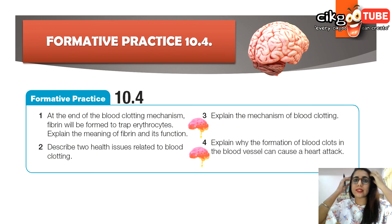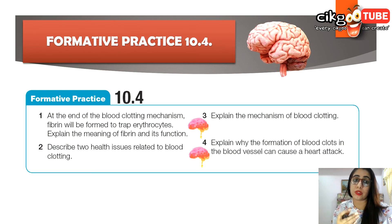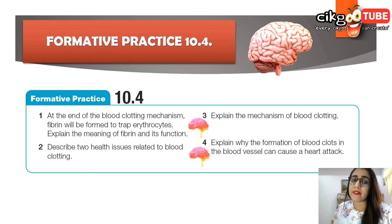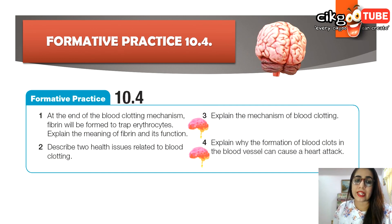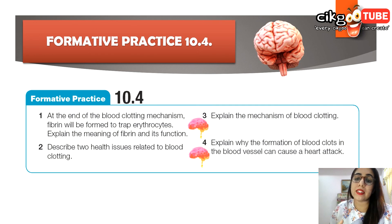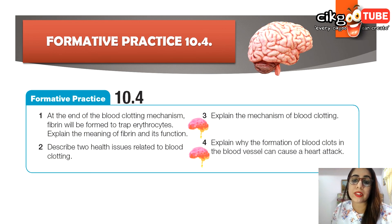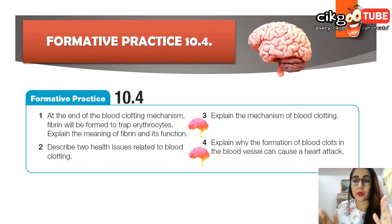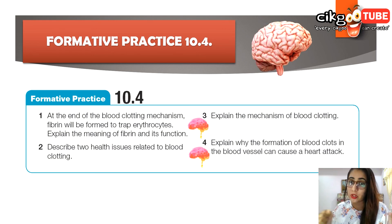We are done with the lesson. You can now answer the formative practice 10.4 from page 184 to test your understanding. The questions ask you to explain the meaning and function of fibrin, describe two health issues related to blood clotting, explain the mechanism of blood clotting using a given chart, and explain why blood clots in blood vessels can cause a heart attack. Try to answer without any reference to check your understanding.